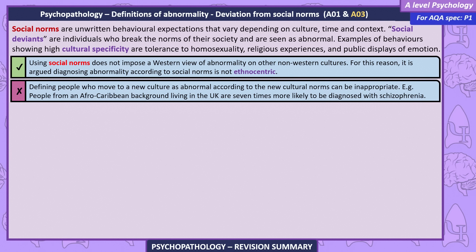Evaluations. Using social norms does not impose a Western view of abnormality on other non-Western cultures. For this reason, it's argued diagnosing abnormality according to social norms is not ethnocentric. However, defining people who move to a new culture as abnormal according to the new cultural norms can be inappropriate. For example, people from an Afro-Caribbean background living in the UK are seven times more likely to be diagnosed with schizophrenia.